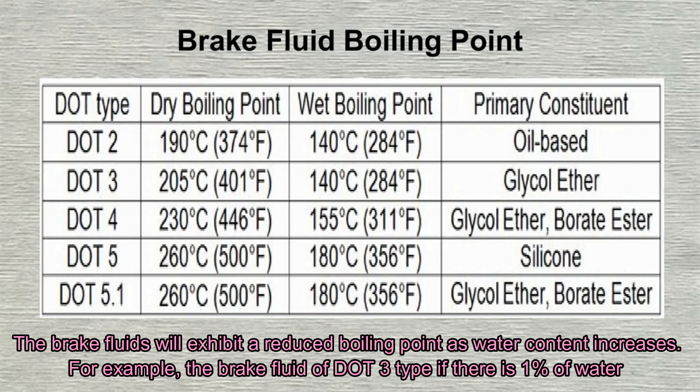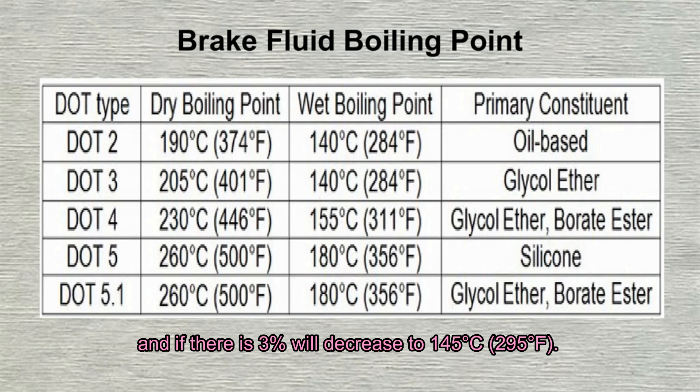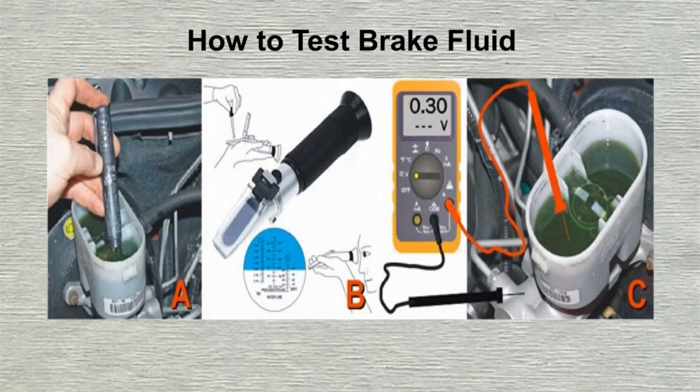Brake fluids will exhibit a reduced boiling point as water content increases. For example, DOT3 brake fluid with 1% water moisture accumulation will have a boiling point decreased to 188°C (370°F). With 2% water, it decreases to 160°C (320°F), and with 3% water it decreases to 145°C (295°F).